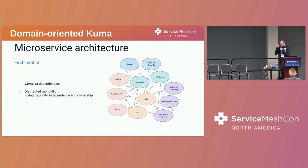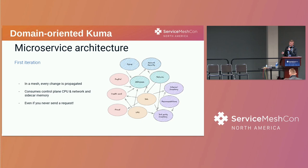What you've basically created is what's known as a distributed monolith, where the services appear to be independent, but really they're very tightly coupled. And if we're using a service mesh, there's another aspect to this — in a service mesh, every node is able to communicate with every other node. That's kind of the idea of a mesh.